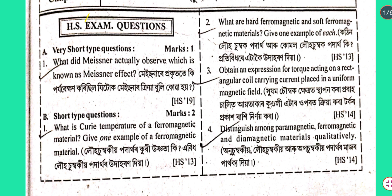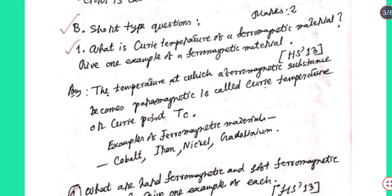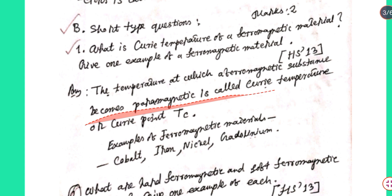What is the Curie temperature of a ferromagnetic material? The temperature at which a ferromagnetic substance becomes paramagnetic is called Curie Temperature or Curie Point, denoted Tc.